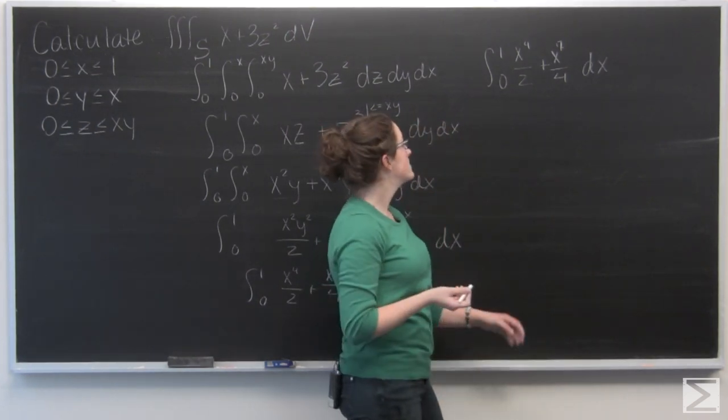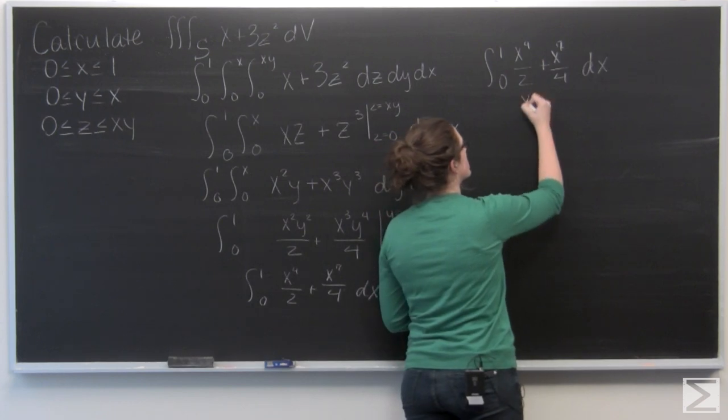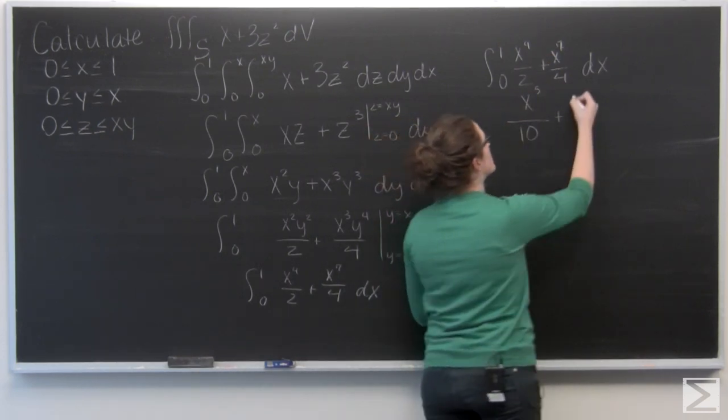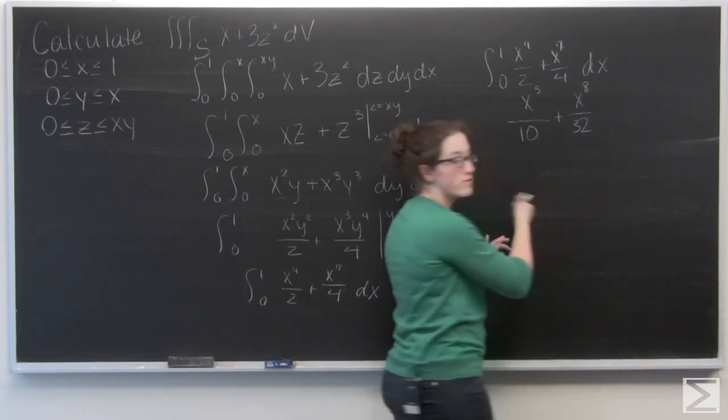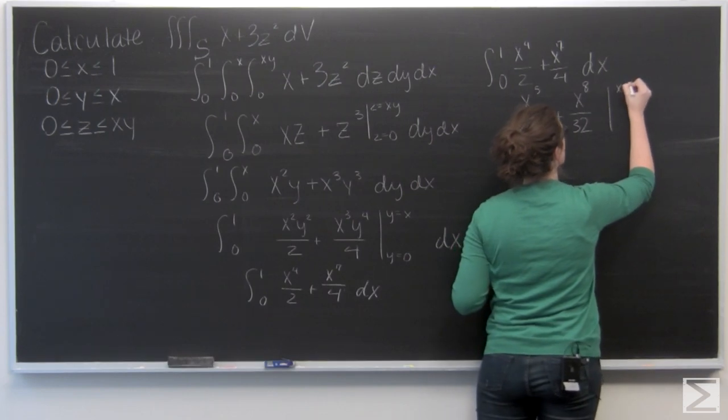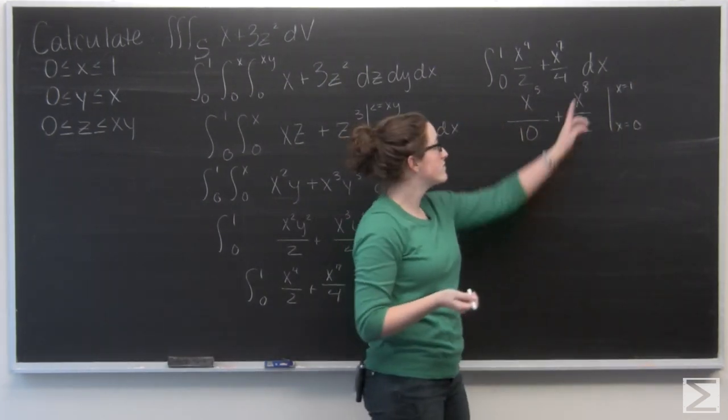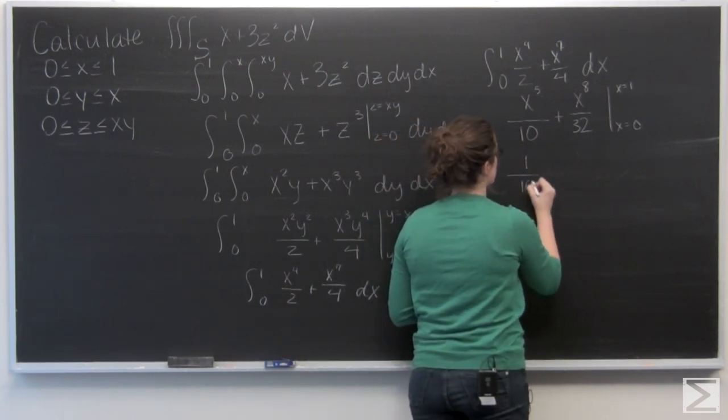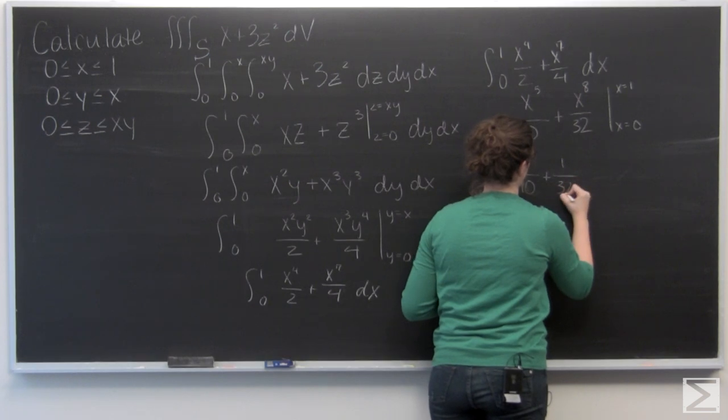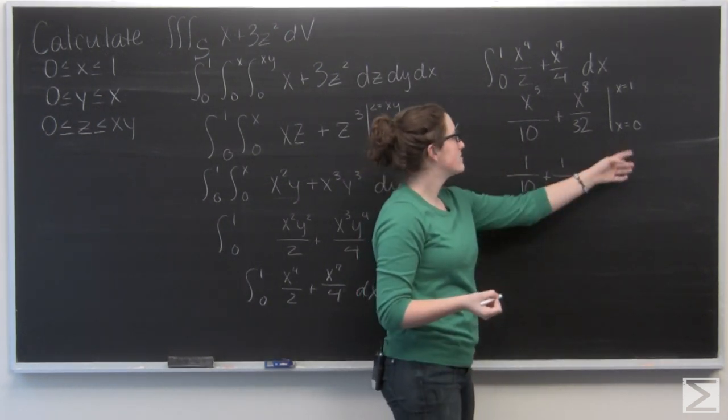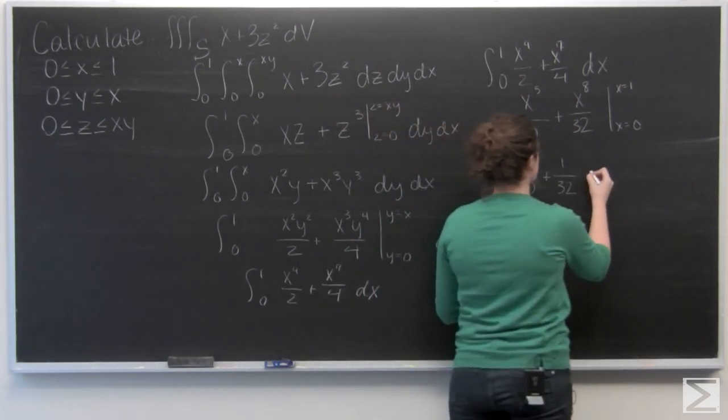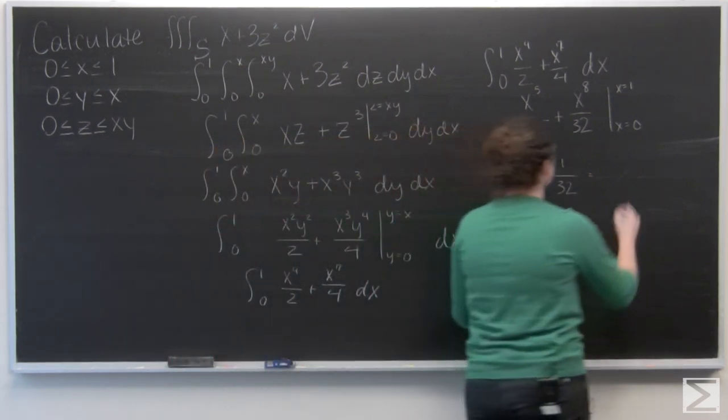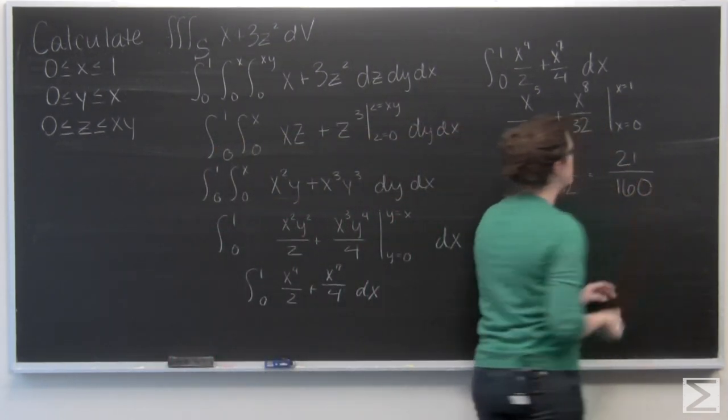Now we're going to integrate with respect to x. So I'm looking at x to the fifth over ten plus x to the eighth over 32. And then I'm evaluating from x equals one to x equals zero. So for the first term, just plug in a one everywhere I see an x. So I'm looking at one tenth plus one over 32. x equals zero, so the rest of the terms aren't going to be there. And then if I add these together, that'll be 21 over 160. And that's our answer.